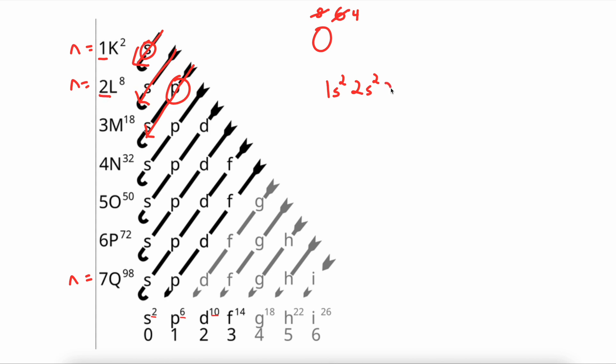So we write a 2 for second energy level. We write our P, but we cannot write 6. 6 is the max electrons that we can fit, but we only have 4 remaining. So we will write 4. And we are now left with 0 electrons.